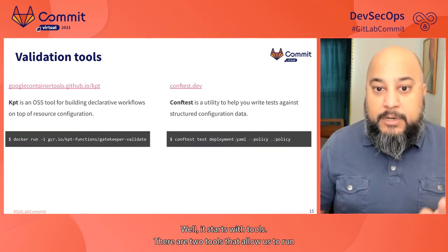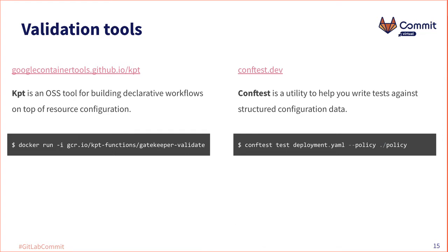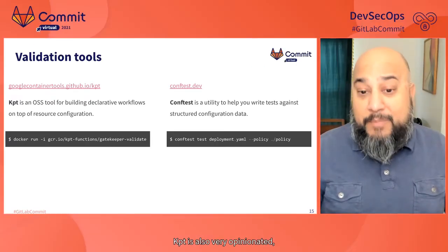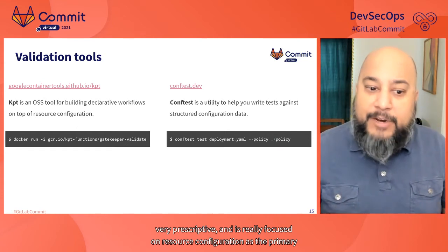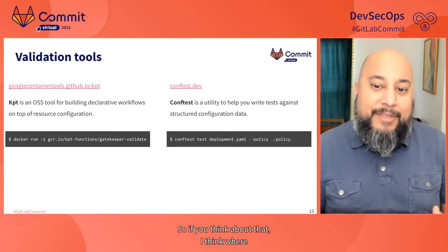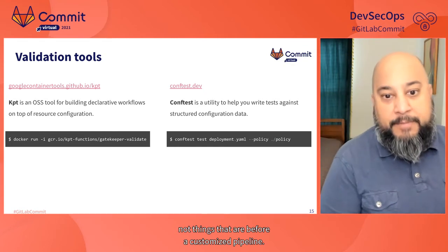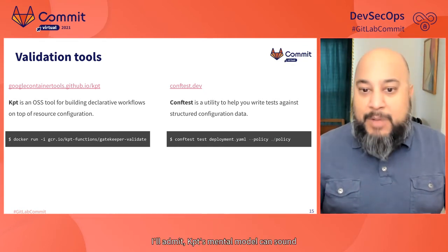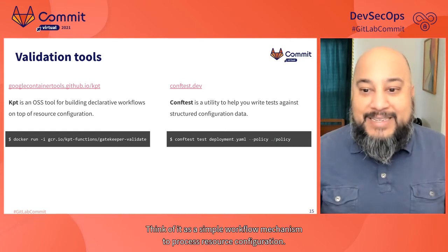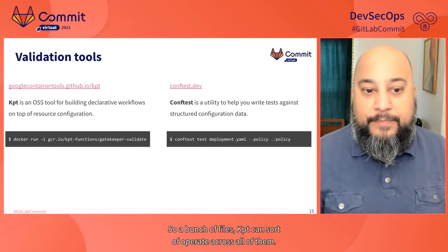There are two tools that allow us to run Gatekeeper validation against arbitrary resources complete with policy inputs. The first is Kpt. It lets you build workflows that work with configuration as data. Kpt includes Gatekeeper validation functionality out of the box. Kpt is also very opinionated, very prescriptive, and is really focused on resource configuration as the primary artifact — not templates or other domain-specific languages. Where Kpt really shines is working with hydrated manifests, not things that are before a customized pipeline. Think of it as a simple workflow mechanism to process resource configuration — a bunch of files that Kpt can operate across all of them.